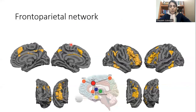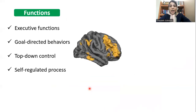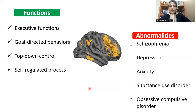As a brief introduction about the frontal parietal network — as you can see in this picture — this network has two main hub regions: one in the dorsolateral prefrontal cortex and the other in the posterior parietal cortex. This network has several connections to cortical and subcortical regions. Previous neuroimaging studies also showed that synchronization, coupling, or connectivity within the frontal parietal network contributes to several neurocognitive functions like executive functions, goal-directed behaviors, top-down control, and self-regulated processes.